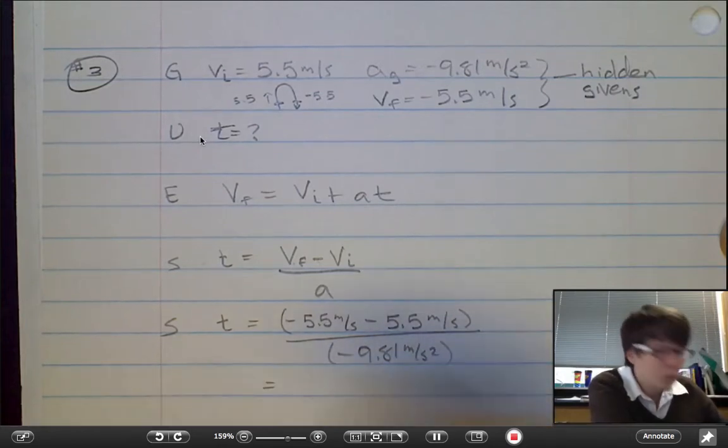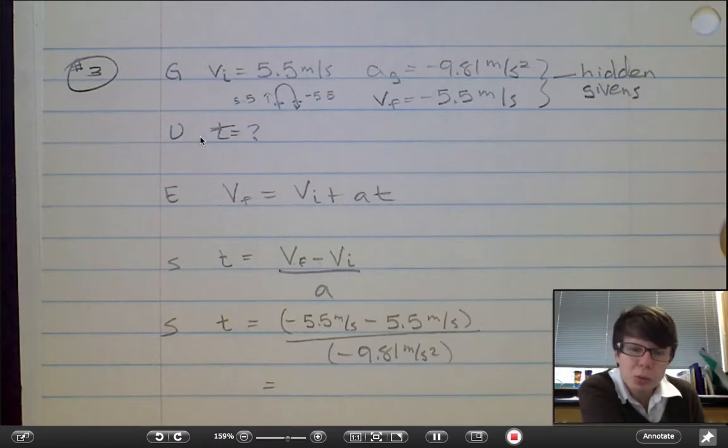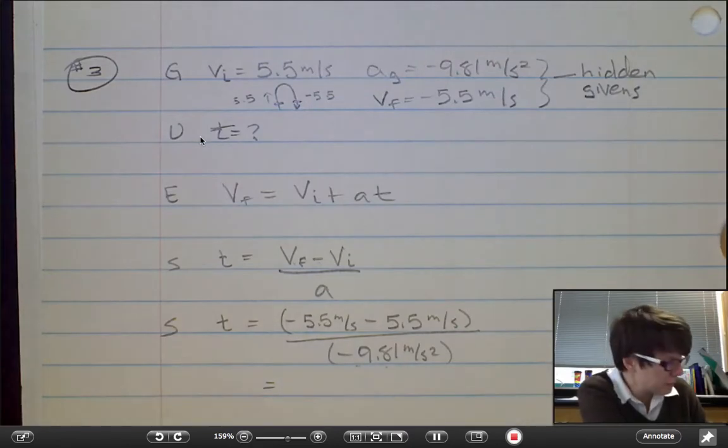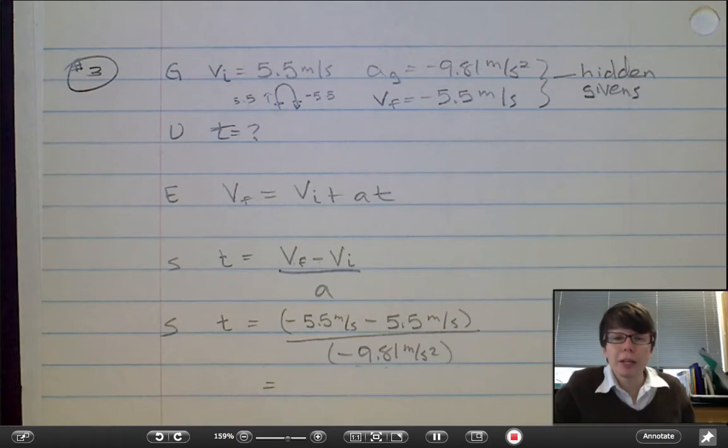The result you would expect here for time will be a positive number. This is a negative 11 divided by negative 10, just about. That'll give you the time for Loki to fall back to the Earth after being thrown up by the Hulk.